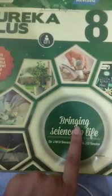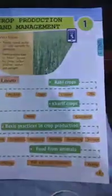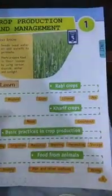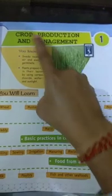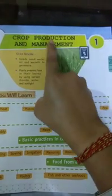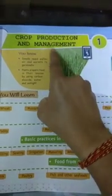This is the book of Class 8th and the title is 'Bringing Science to Life.' Today we will start with Chapter 1, and the chapter name is Crop Production and Management.